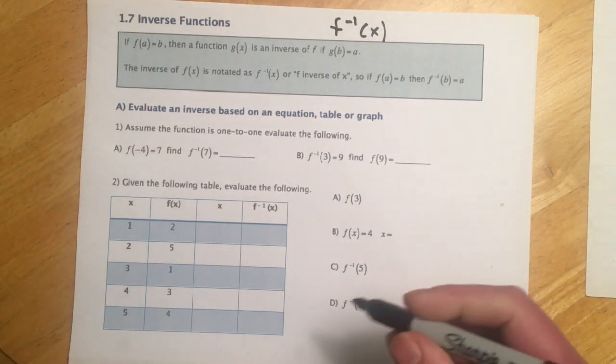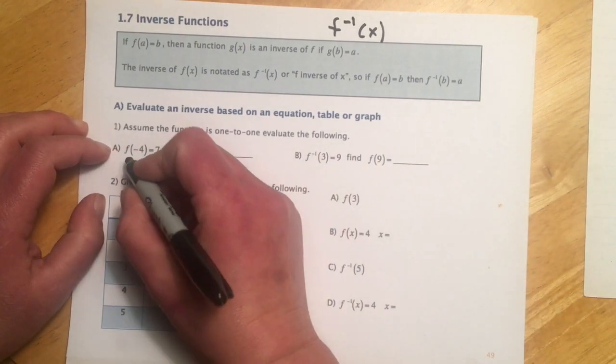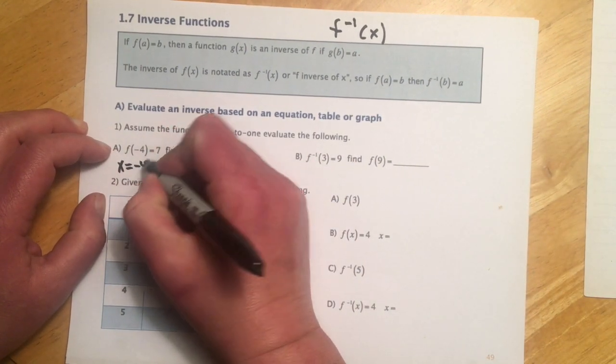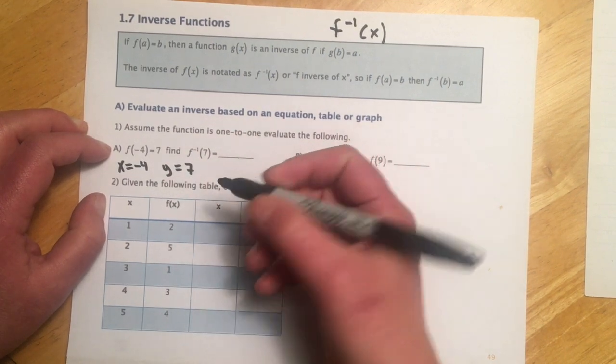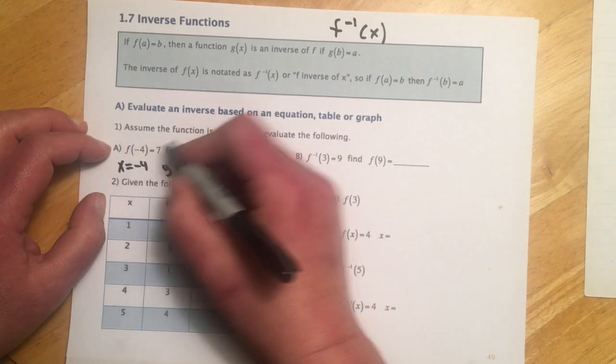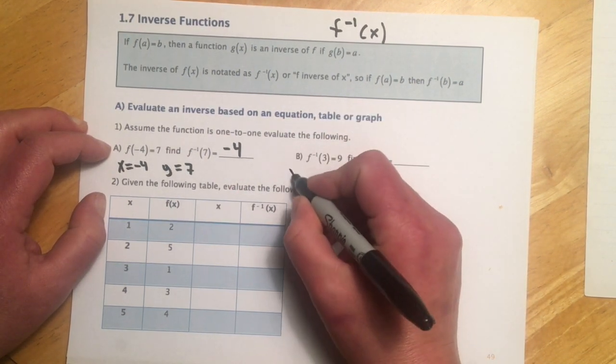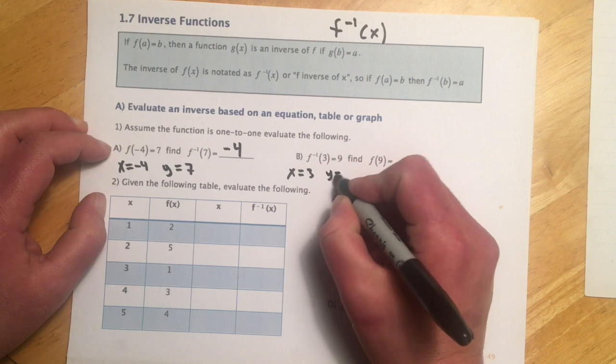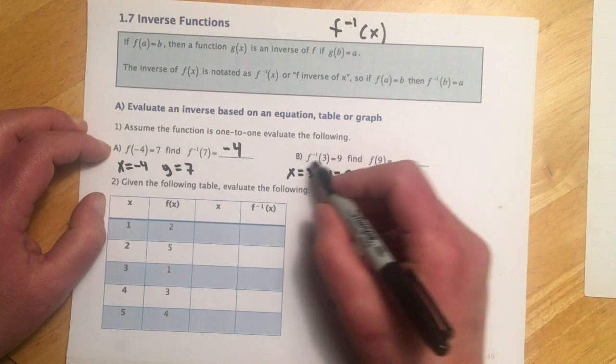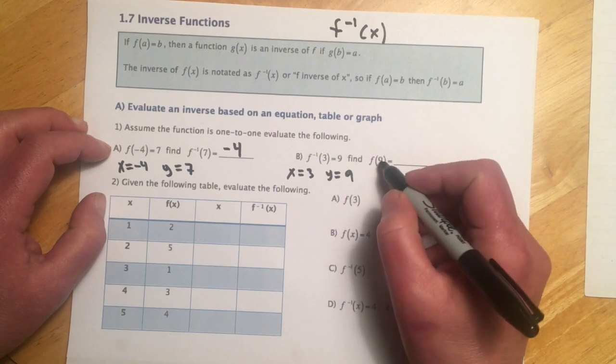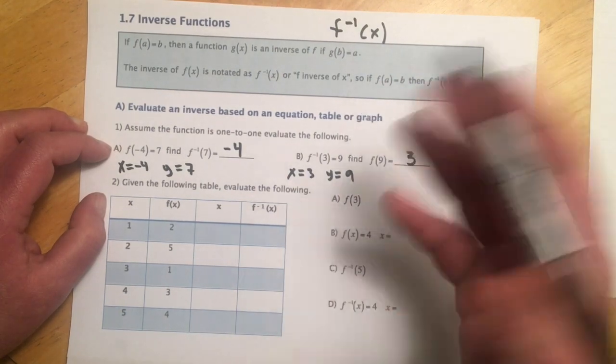So looking at a couple examples here, this first one, we're given f of negative 4 equals 7. So that means when x equals negative 4, what we think of as y equals 7. So if I have an inverse and I put in the 7, what I'll get out is the negative 4. Likewise over here, x equals 3, y equals 9. So if I put the 9 into, and this was on the inverse, if I put the 9 into the inverse, I'm going to get the 3 back out, because we're always going to get the opposites.